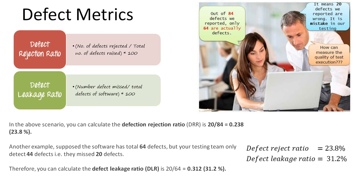Hello everyone, welcome. This is Pavan. In this video I'm going to explain defect metrics. Why do we need defect metrics? Let's see this scenario. Out of 84 defects we reported, only 64 are actually defects. It means 20 defects we reported are wrong - a mistake in our testing.